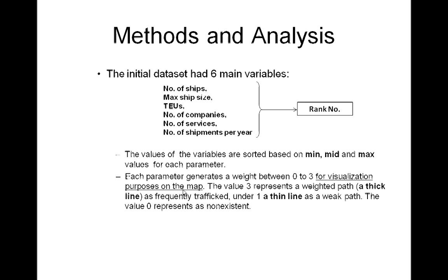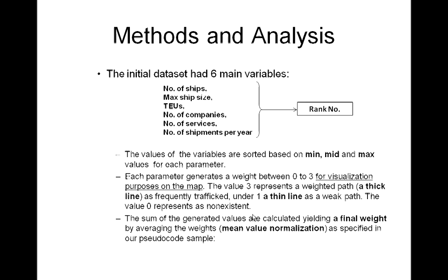Each parameter generates a weight between 0 to 3 for visualization purposes on the map. The value 3 represents a weighted path — a thick line — as a frequently trafficked route, while a value of 1, a thin line, would be a weak path.